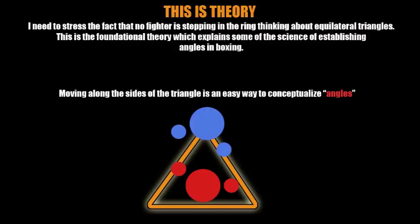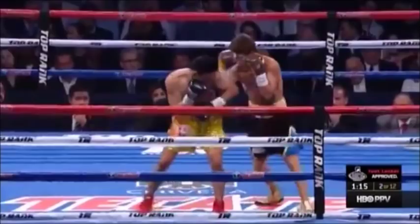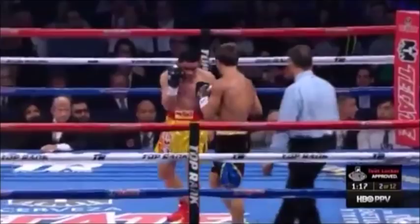As I illustrate this in the video, moving along the sides of this triangle is an easy way for you to conceptualize the establishing of angles in boxing — for being the best fighter in the Olympic Games. I mean this. So hopefully the concept I'm trying to put forward is actually clear for you to see based on the depiction of this image.